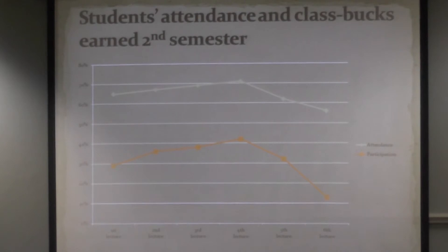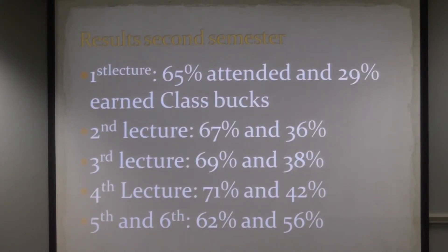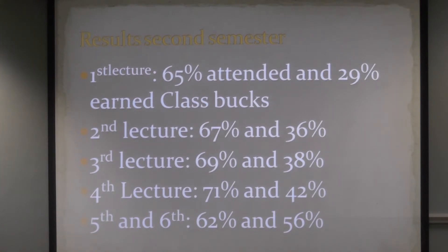This was the second semester results — the top graph was class attendance and the bottom one class participation. In the first lecture, 65% attended and 29% earned their class marks. I asked where the others were and they said they were still at home. There's a tendency after the recess — maybe all of you encounter that — students tend to come two weeks later. When asked why, they cited financial problems and no transport. Second lecture it started picking up as more students returned to campus.